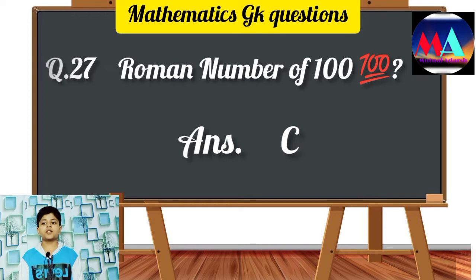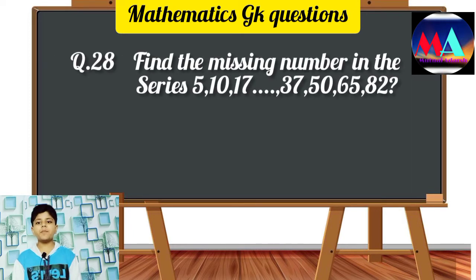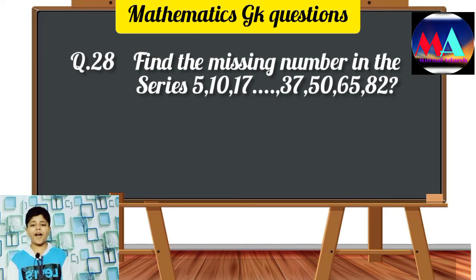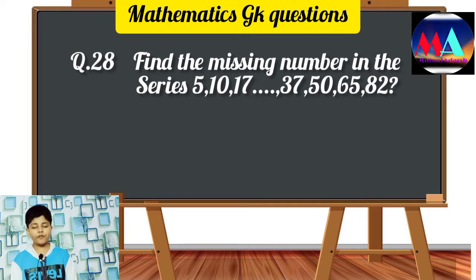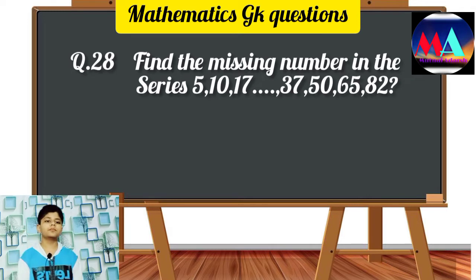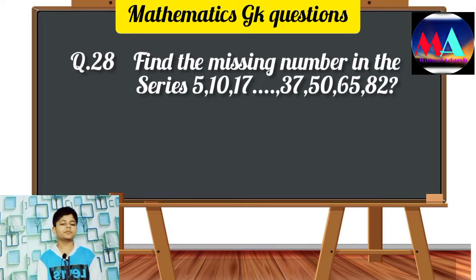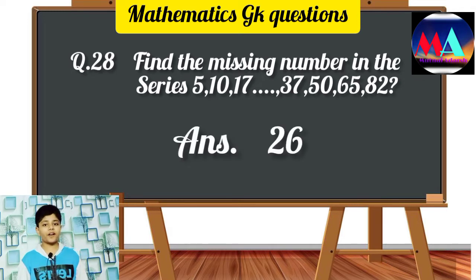Question number 28: Find the missing number in the series: 5, 10, 17, ?, 37, 50, 65, 82. Answer: 26.